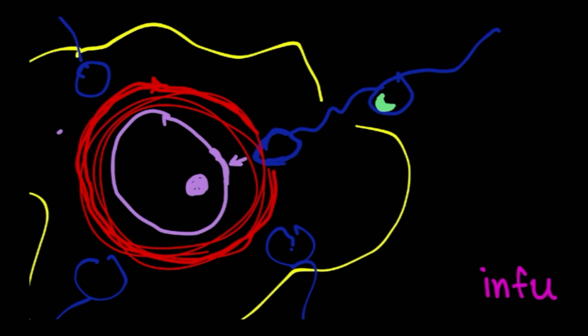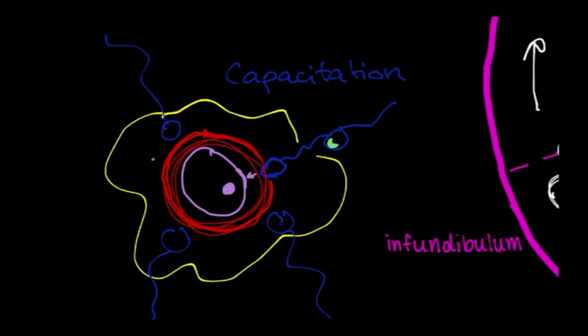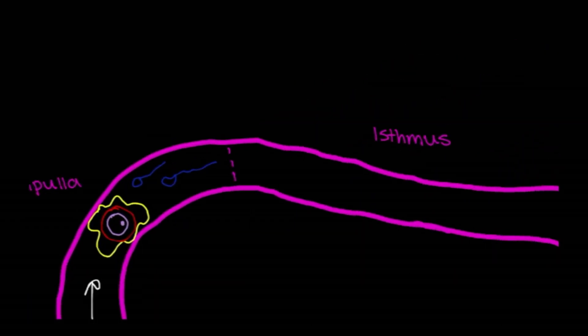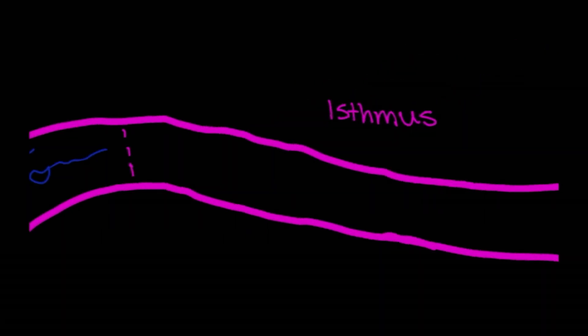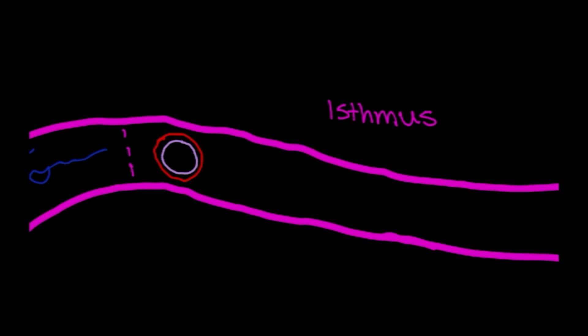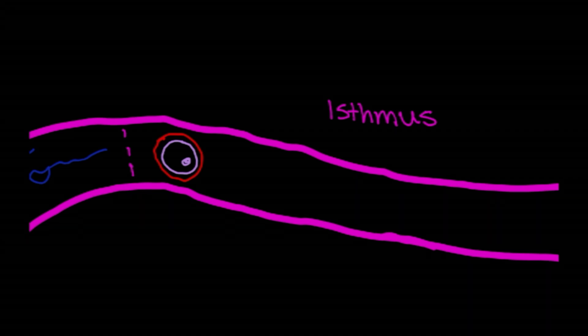Once fusion of the sperm and ovum membranes occur, the male and female pronuclei then break down and fuse. And this forms a zygote. Now let me draw that zygote here. So we've got our zona pellucida. And then here is our zygote. And it's kind of that first stage of human life. This is our developing embryo right here.